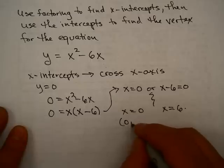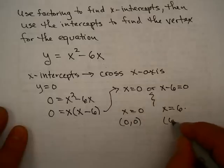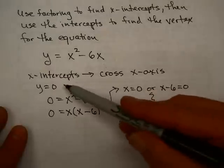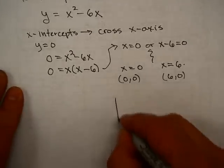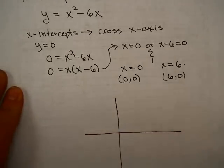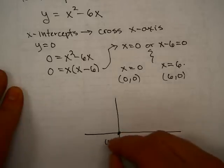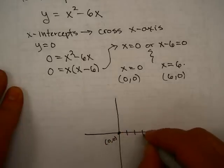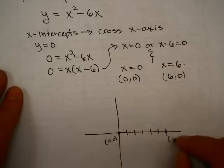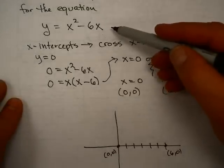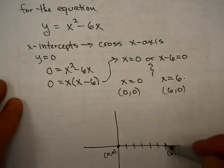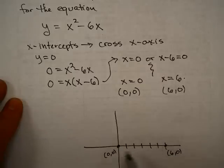This tells me that my x-intercepts are (0, 0) and (6, 0). Remember, at x-intercepts, y has to be 0. One property of a parabola — and remember the graph of a quadratic equation is a parabola — is that parabolas are symmetric. Since these two points are on the parabola, the vertex, where the parabola turns around, has to be exactly halfway in between.